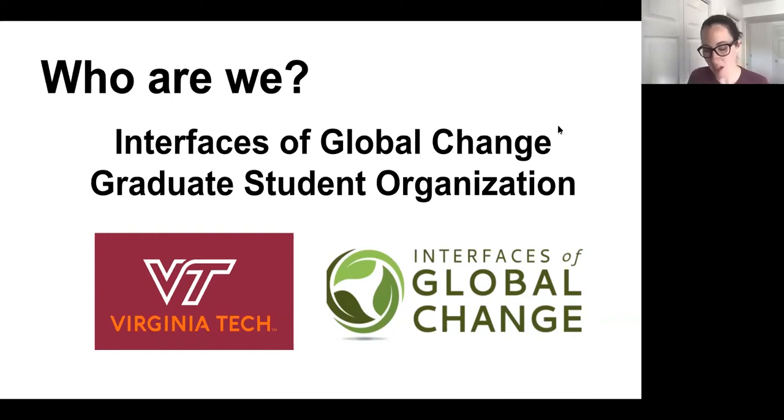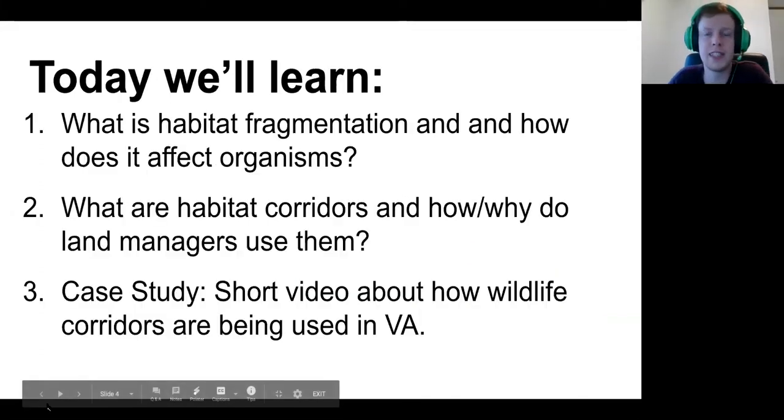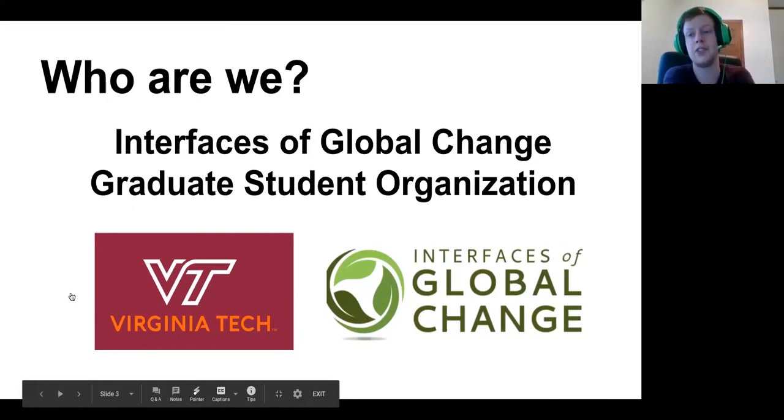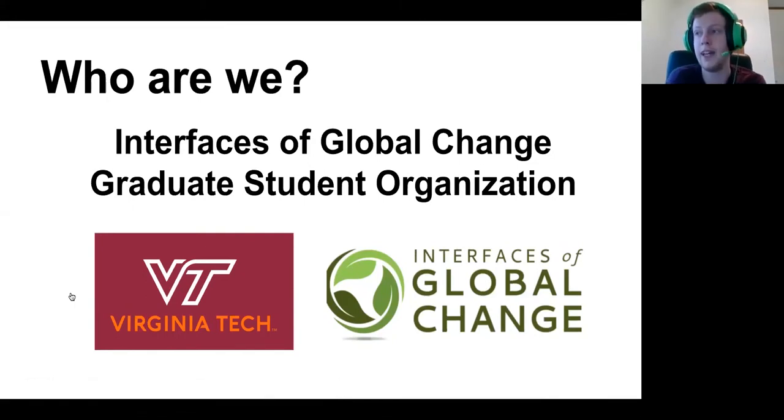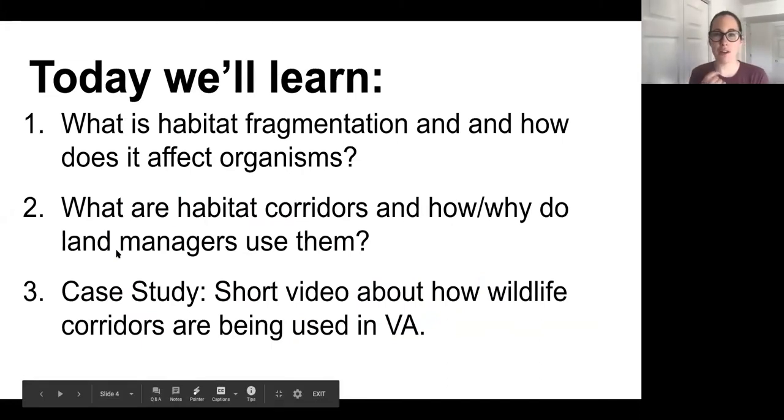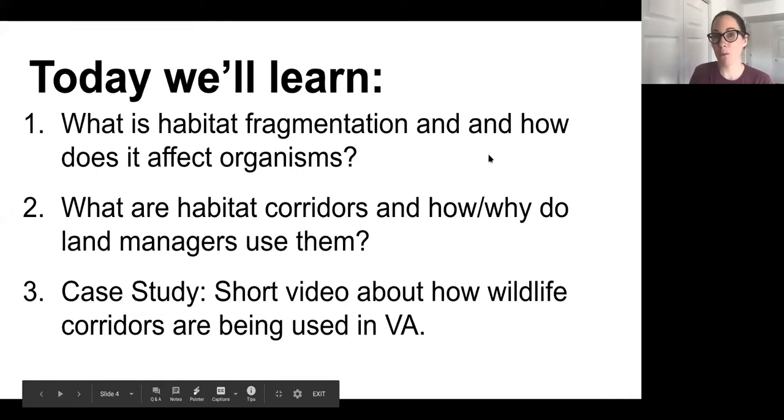I'm Isaac VanDeist. I'm also a biology student at Virginia Tech, and I look at how cities change what is available for birds to eat and how that affects them and their babies. Today the first thing that we're going to do is go over what habitat fragmentation even is and how it affects organisms, and then we are going to talk about habitat corridors and how and why land managers use them.